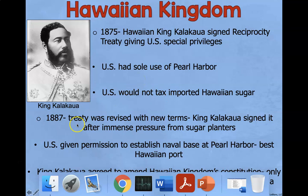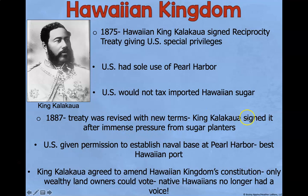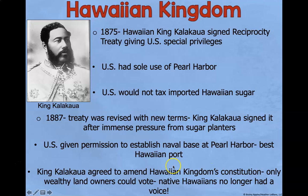In 1875, King Kalakaua signed the Reciprocity Treaty giving the US special privileges. The US had sole use of Pearl Harbor, but would not tax imported Hawaiian sugar. In 1887, the treaty was revised with new terms, and King Kalakaua signed it after immense pressure from the sugar planters. The US was given permission to establish a naval base at Pearl Harbor, the best Hawaiian port. Only wealthy landowners could vote, and native Hawaiians no longer had a voice.